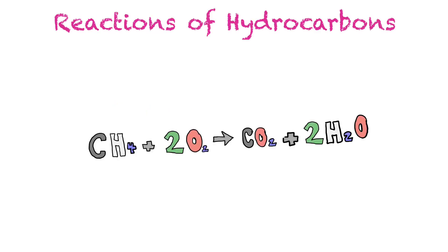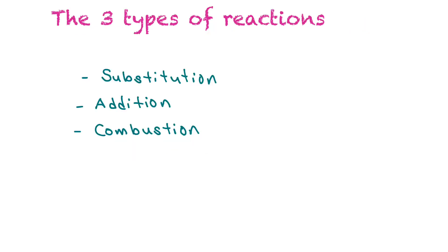Now that we're experts at alkanes, alkenes, and alkynes, we're going to learn about the reactions of hydrocarbons. There are three to explore: addition reactions, substitution reactions, and combustion reactions. Substitution happens with alkanes, addition reactions happen with alkenes and alkynes, and combustion reactions can happen with any hydrocarbon.